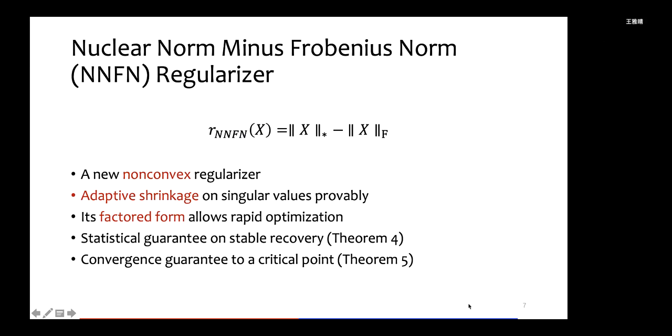So what is NNFN regularizer? It is the nuclear norm minus Frobenius norm. It is a new non-convex regularizer. We prove that it also applies adaptive shrinkage on the singular values, and we discover it can be written in a factored form, which allows rapid optimization. We prove that stable recovery is guaranteed, and also our proposed optimization algorithms can converge to critical points.